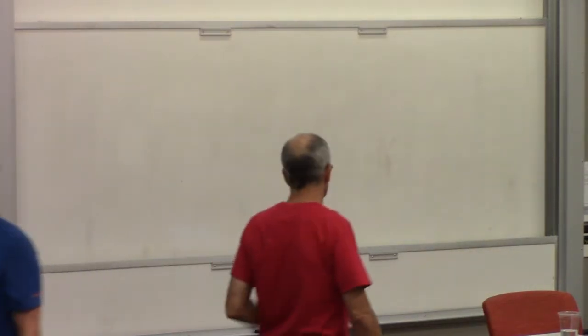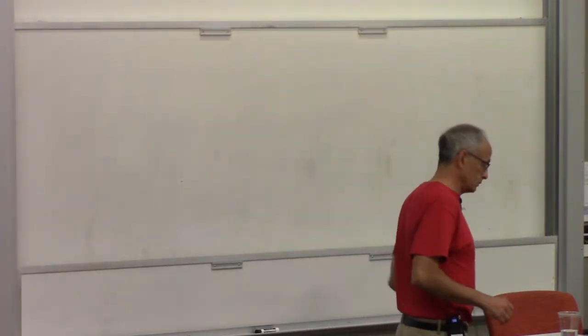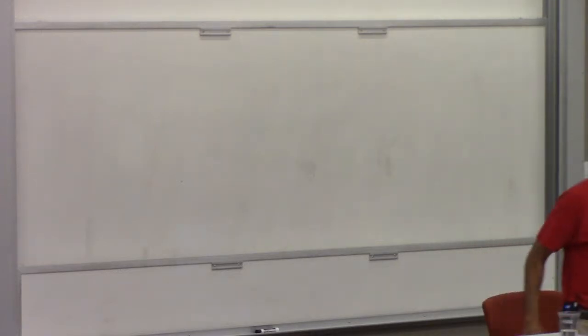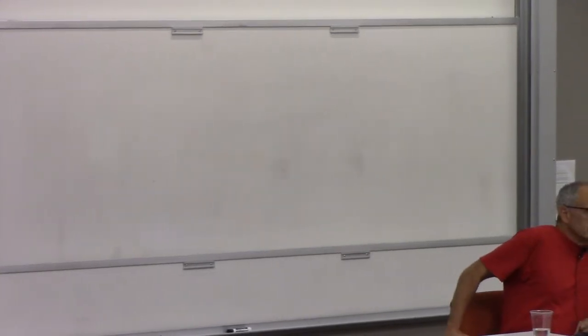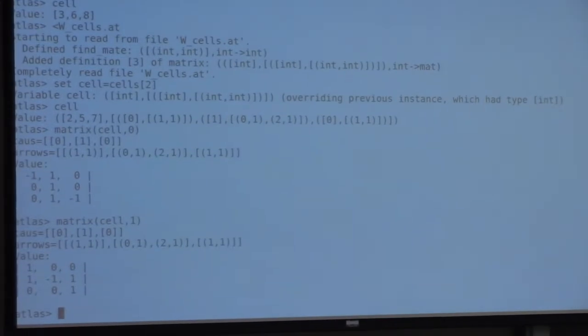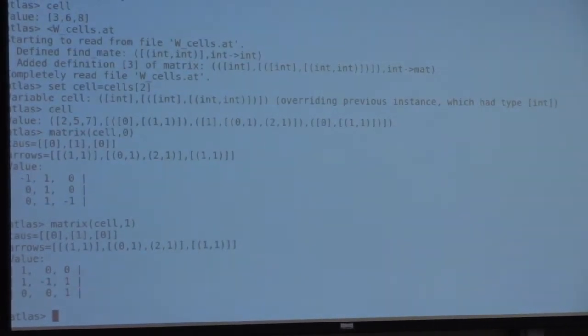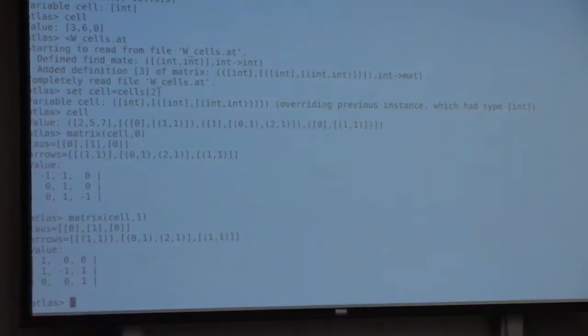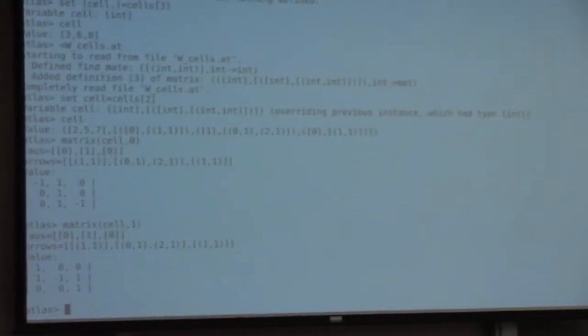All right, so I just want to finish doing a couple of examples of the software. So just the other night, in response to a request from Roger, I wrote a little function to give the matrices of the action of the simple roots on the cell representations. It's not in the version on Git yet, but it will be shortly, and I just wanted to show you how that works.